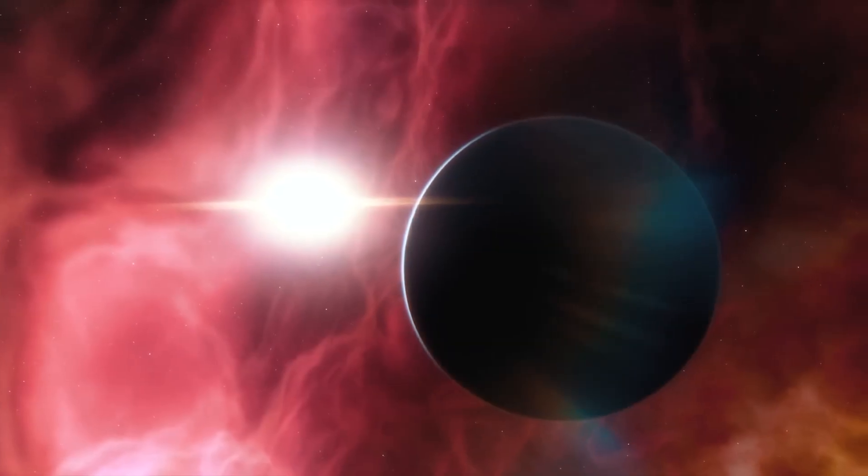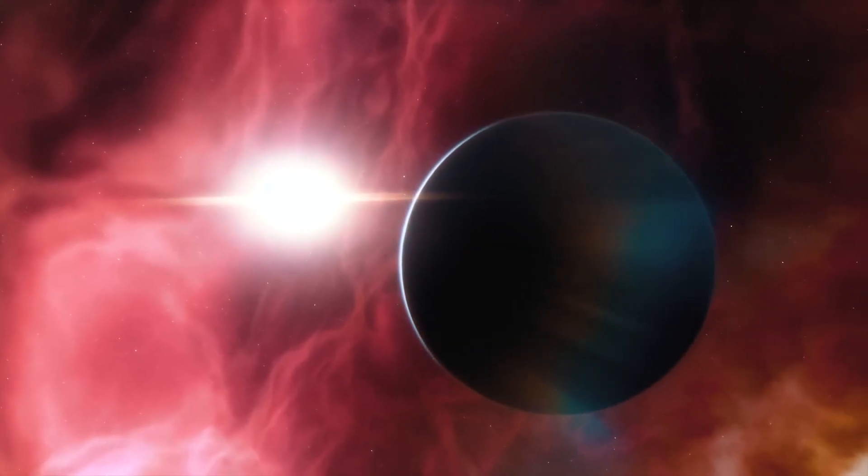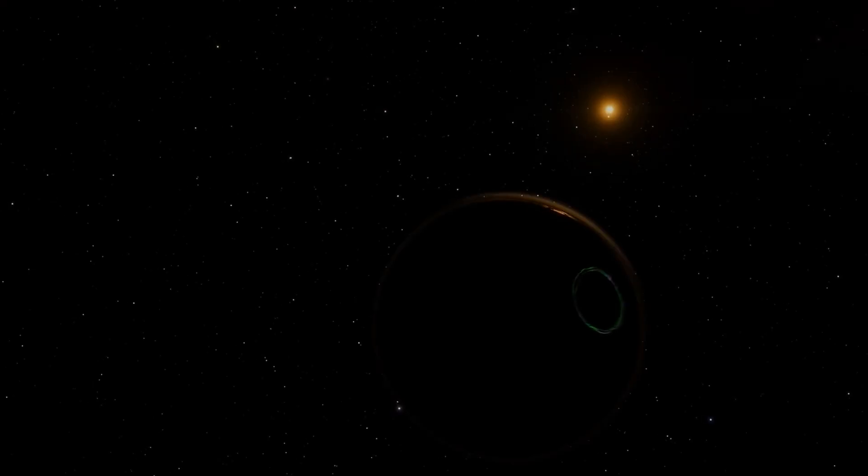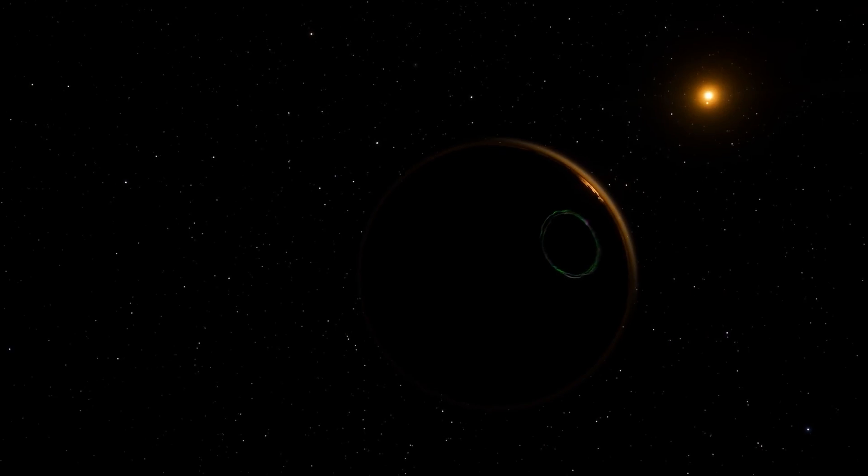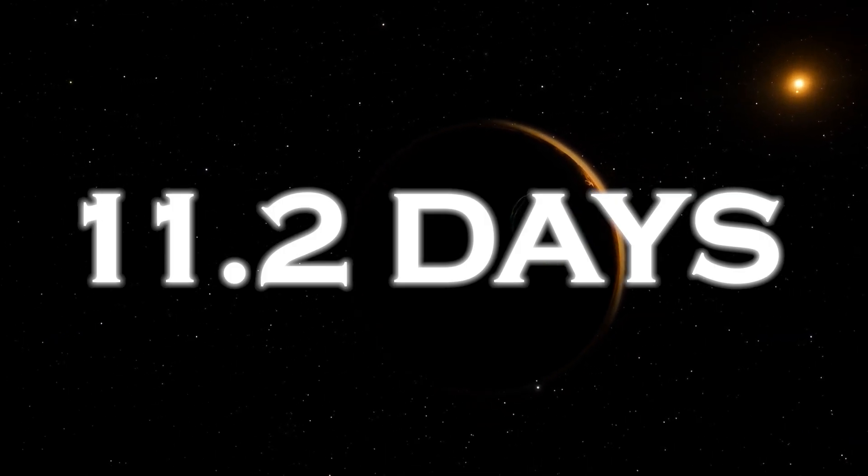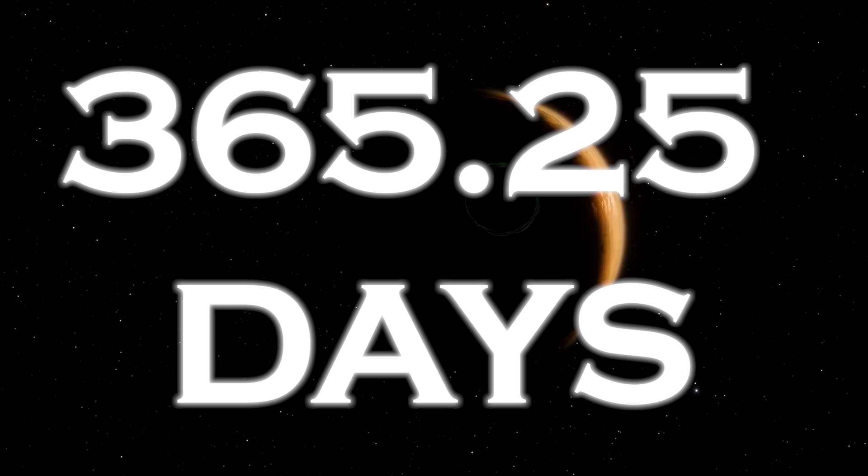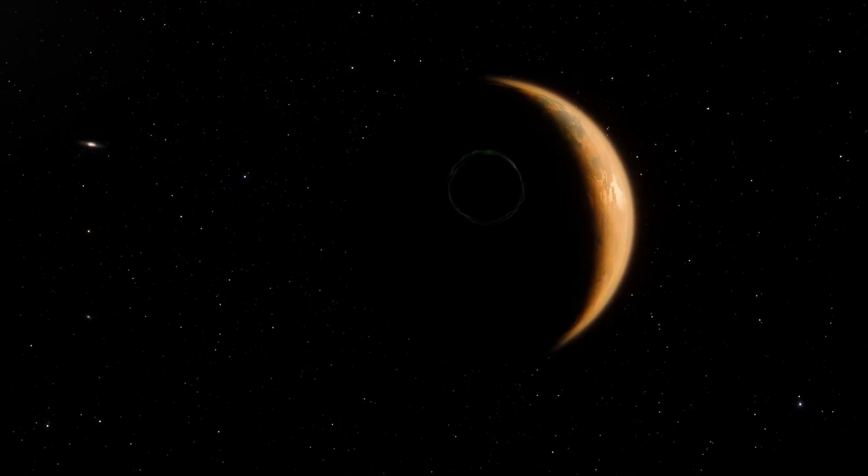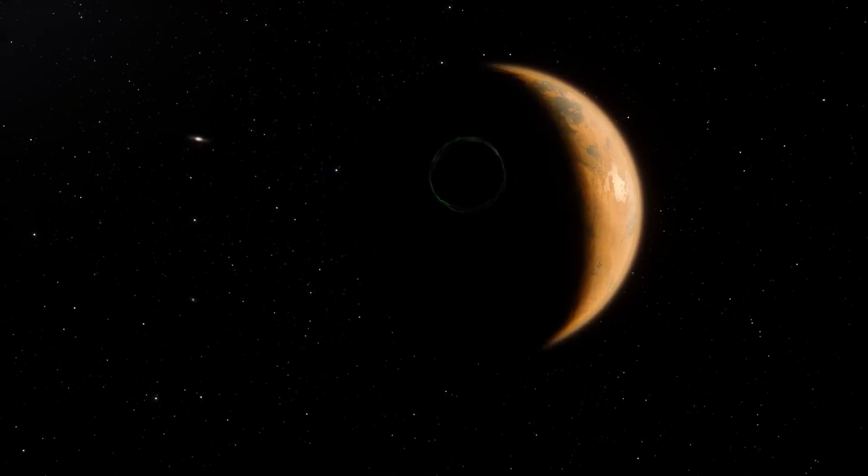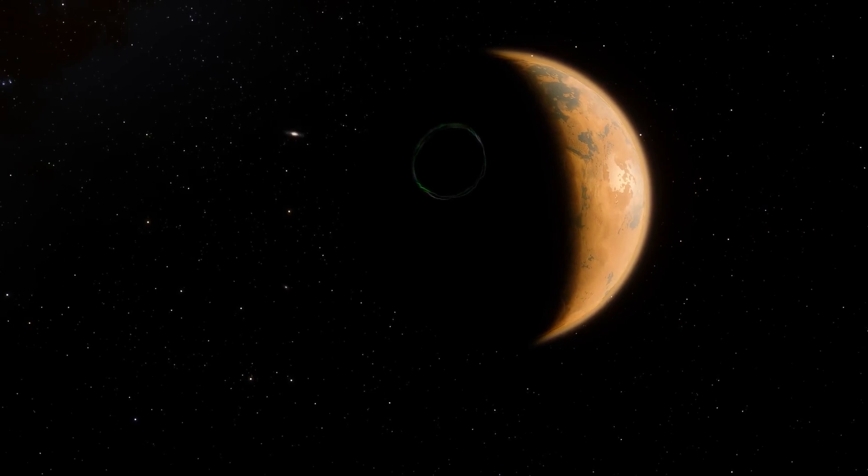As for Proxima b, its mass is estimated to be about 1.07 times that of Earth. Remarkably, it completes an orbit around its star in only 11.2 days, compared to our Earth's year of 365.25 days. This gives us an estimate of the size of the star orbiting Proxima b.